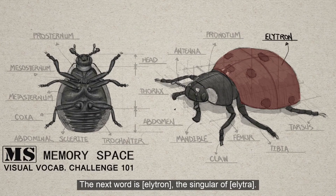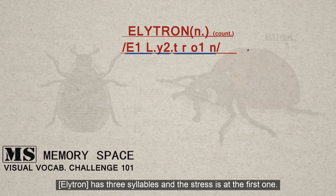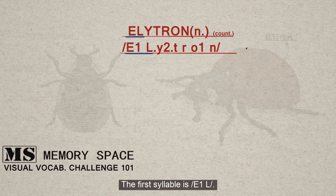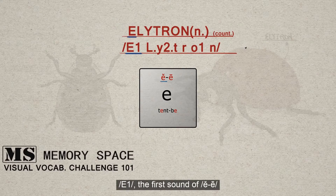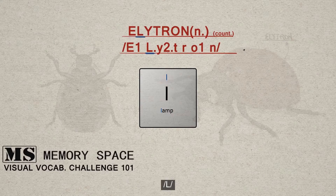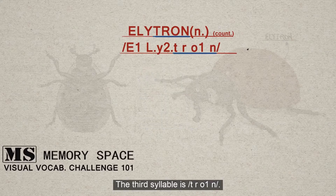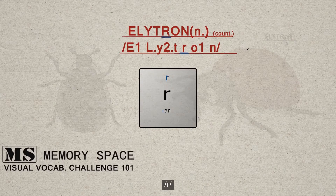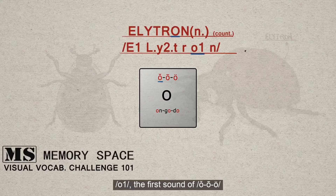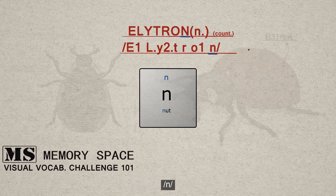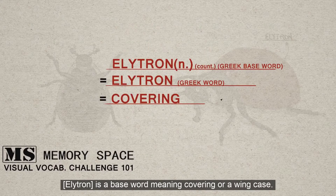The next word is elytron, the singular of elytra. Elytron has three syllables and the stress is at the first one. The first syllable is 'el' — E, first sound of A-E. The second syllable is 'i' — E, second sound. The third syllable is 'tron' — T, R, O, the first sound of A-O-U. Elytron is a base word meaning covering or a wing case.